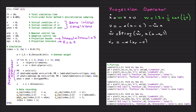This is how you implement the projection operator in code, along with the control signal and reference model for the uncertain system. These sections handle data recording and plotting. I included the full code so you can take a screenshot and implement it for your own needs.